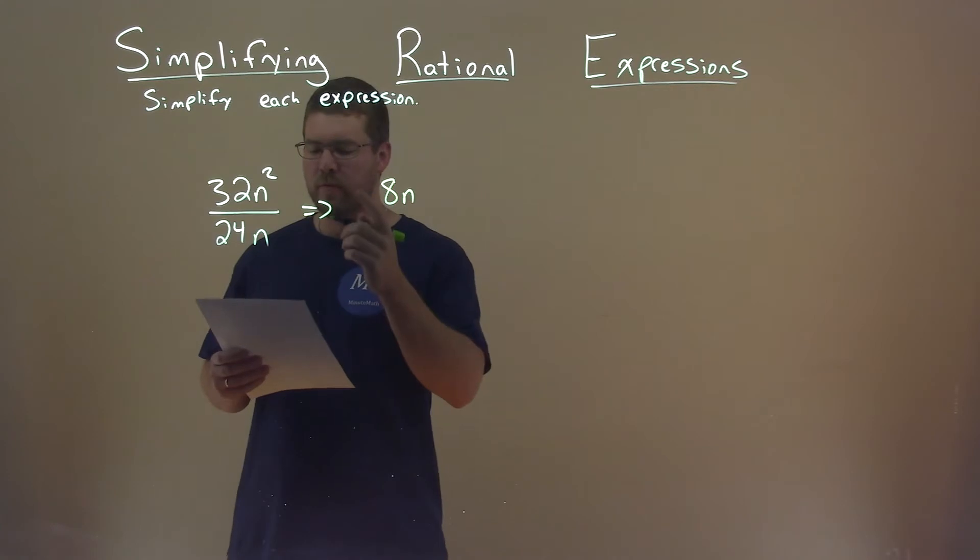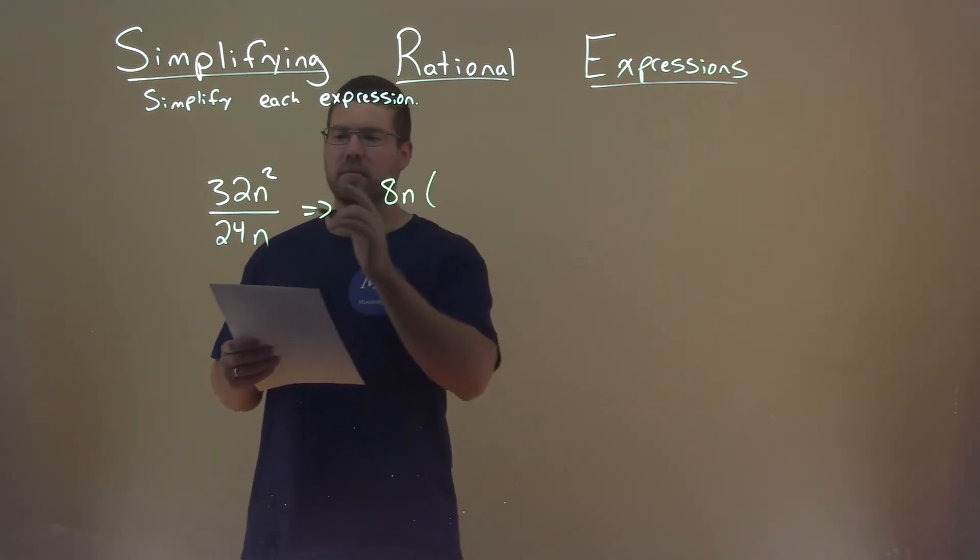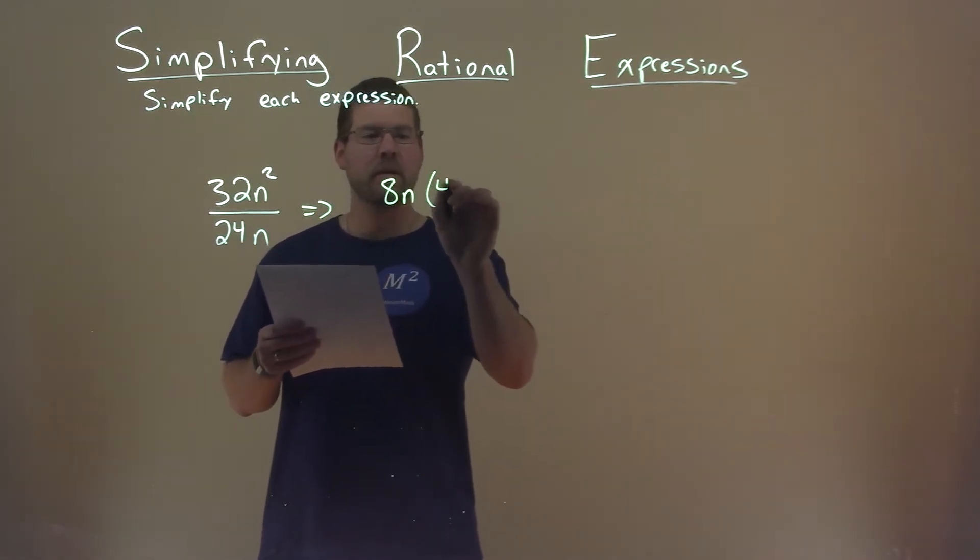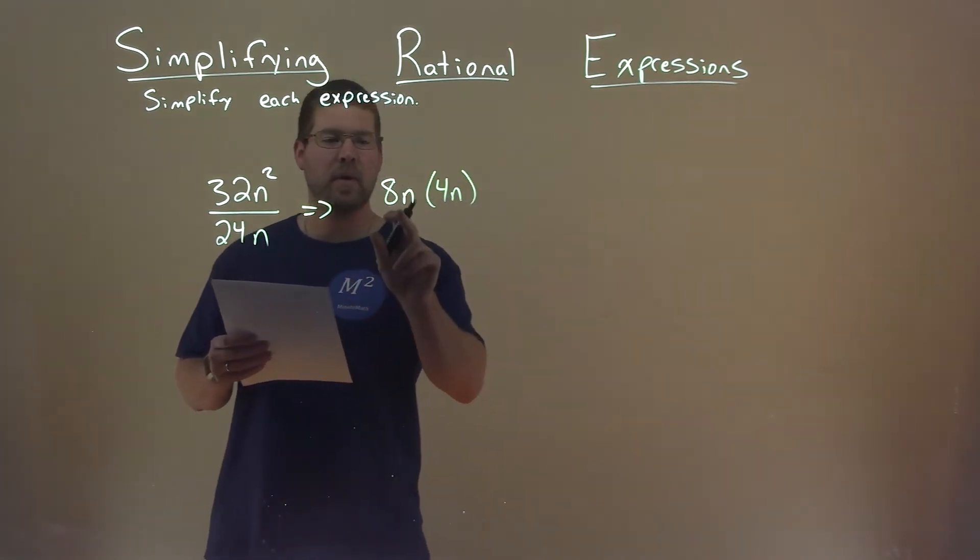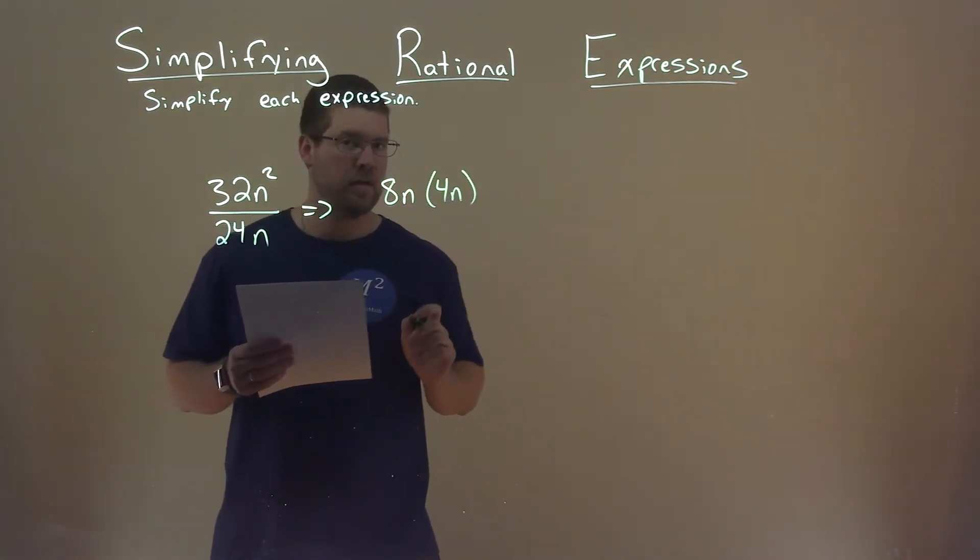So if I pull out an 8n from the numerator, I'm left with just, well, 32 divided by 8 is 4, and we have 4n there. So 8n times 4n is 32n squared.